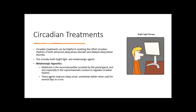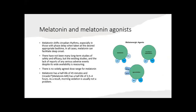Circadian treatments can be helpful in resetting offset circadian rhythms of both advanced sleep phase disorder and delayed sleep phase disorder, including both bright light therapy and melatonergic agents. Melatonin is a neurotransmitter secreted by the pineal gland and acts specifically in the suprachiasmatic nucleus to regulate circadian rhythm. Melatonin and melatonin agonists shift circadian rhythm, especially in those with phase delay when taken at the desired bedtime, and can facilitate sleep onset. Melatonin has a half-life of 45 minutes; circadian melatonin modified-release has a half-life of 3.5–4 hours, so morning sedation is usually not a problem.